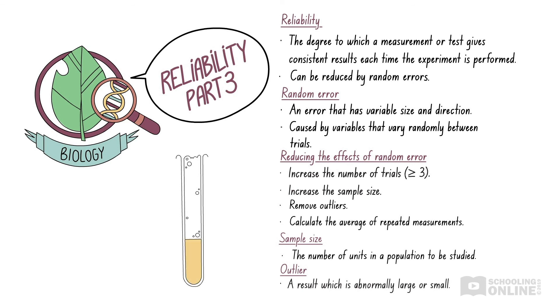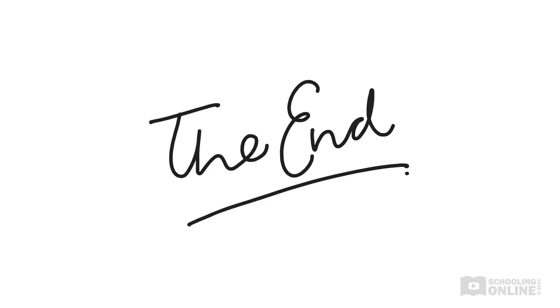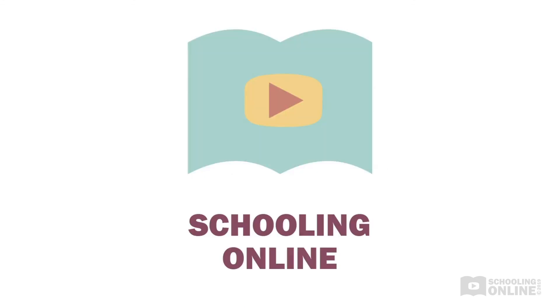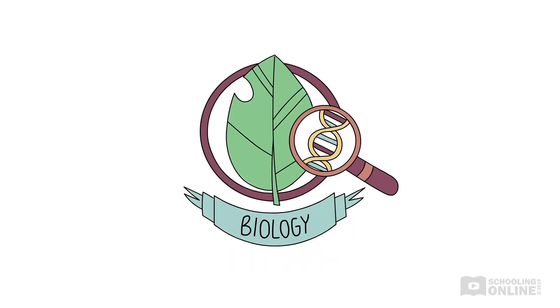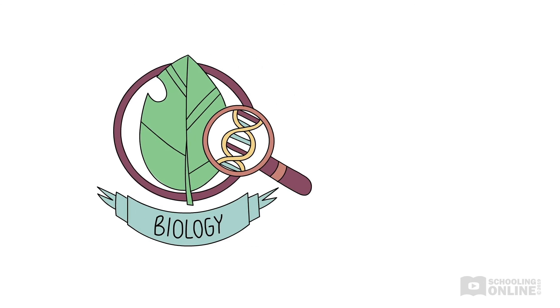An outlier is a result which is abnormally large or small. We hope you enjoyed this Schooling Online production. For more easy lessons on biology, check out our first video on validity.